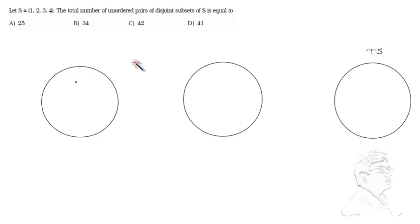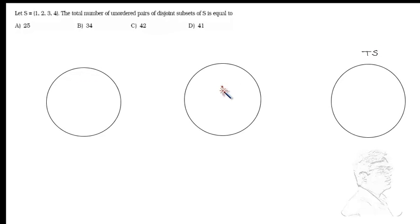Number one can be placed here or here or here. Here means neither here nor there. Number two can be placed here or here or here. Likewise number three, likewise number four. So we have three to the power four number of ways.